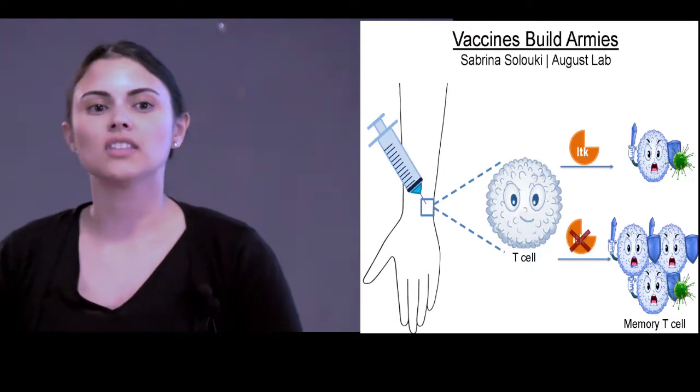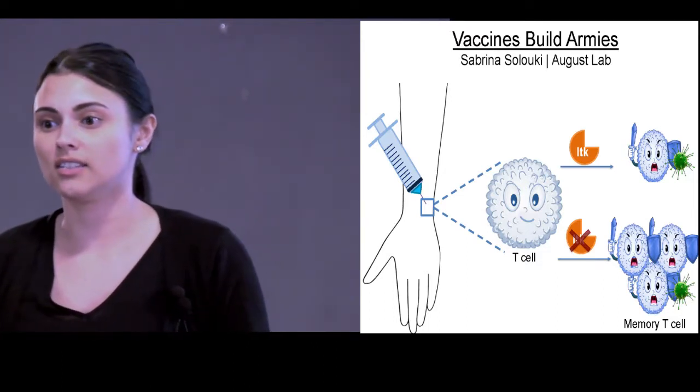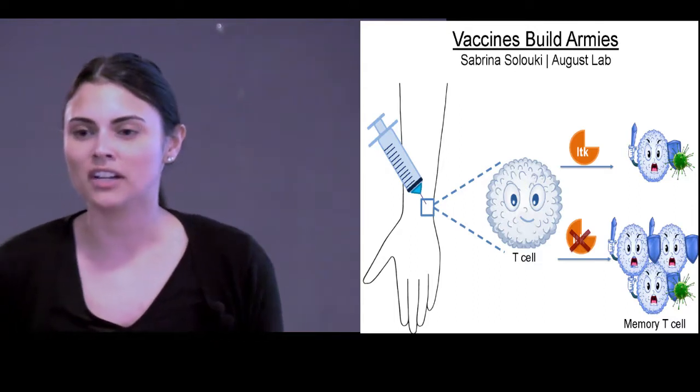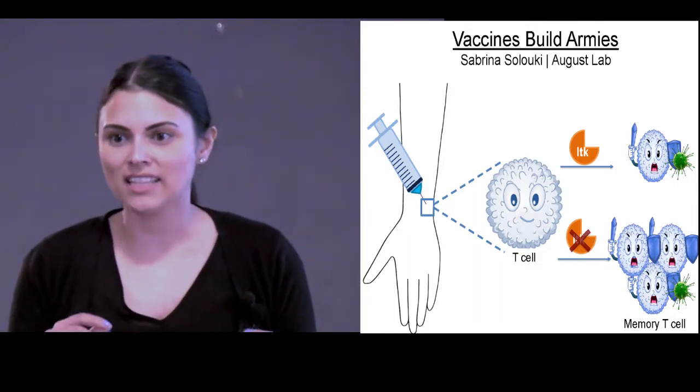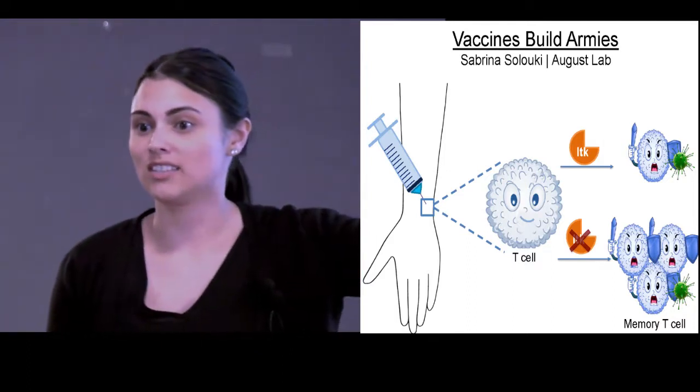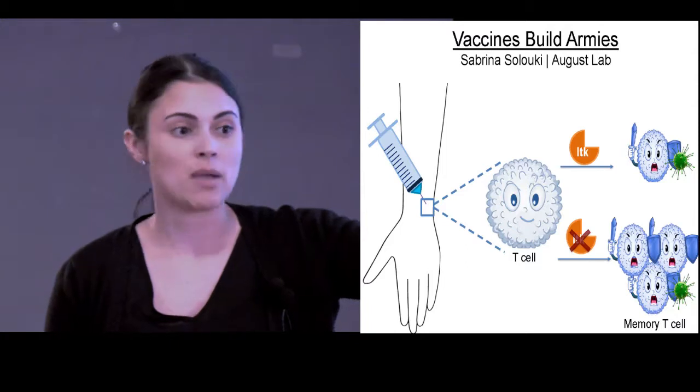So to do this in the lab, I've been studying a protein found in all T-cells known as ITK. And what we discovered is that when you eliminate ITK from these T-cells, it results in a significant increase in the number of these elite memory T-cells.